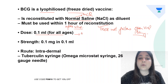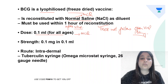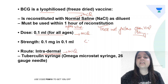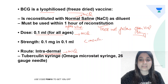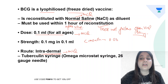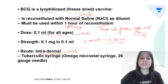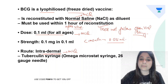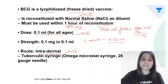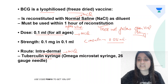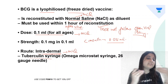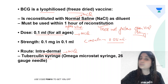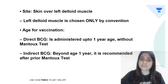The dose is 0.1 ml and the route is intradermal. However, for any child up to 1 month of age, the dose is 0.05 ml. This is because in children less than 1 month, a higher dose can lead to suppurative lymphadenitis. It is given by tuberculin syringe — you can never use an insulin syringe for a tuberculin test, or a tuberculin syringe to give insulin.